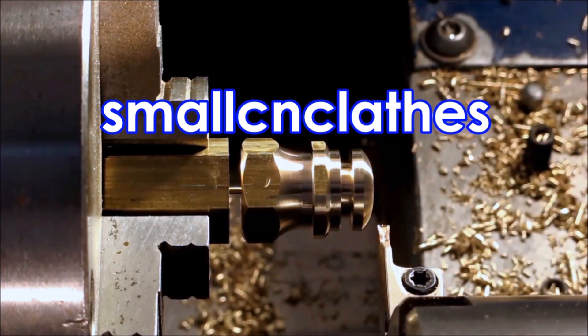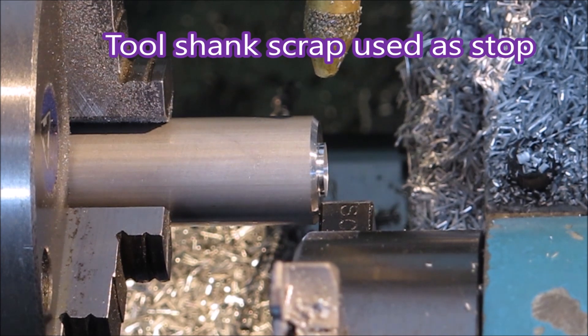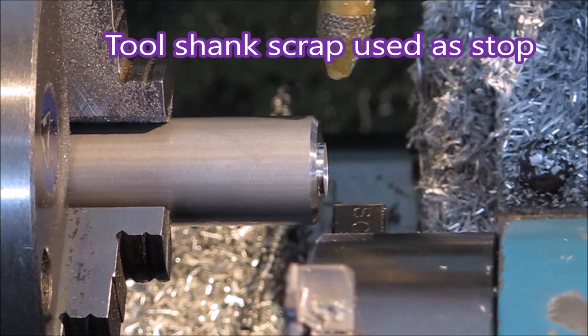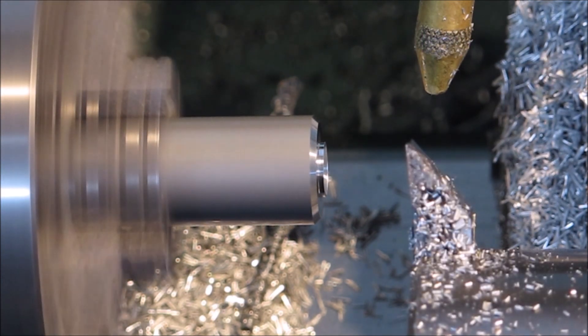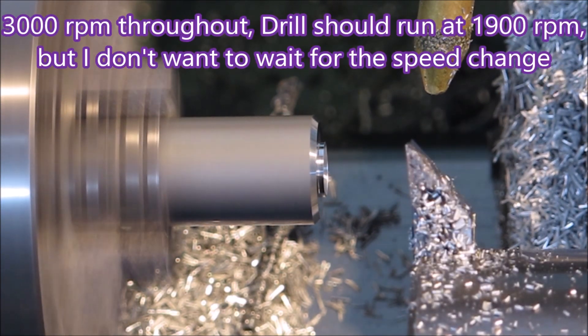So I used a piece of old 10 by 10 shank from a tool that's scrap because I have to shorten them to fit the turret. You saw it there, it's just used as a stop for the material to be pulled out to.